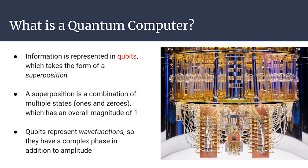Information in a quantum computer is represented in qubits, as opposed to a classical computer which uses bits — ones and zeros. A qubit is represented in the form of a superposition, which is a combination of multiple states. So instead of just being one or zero, it's one and zero in a specific combination. Because qubits represent wave functions, they have a complex phase in addition to amplitude, and we'll go into more detail on that later.